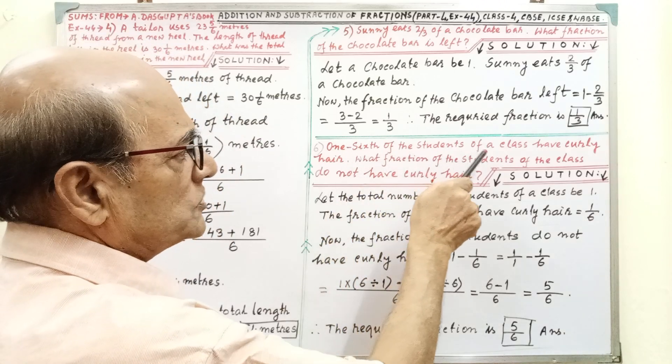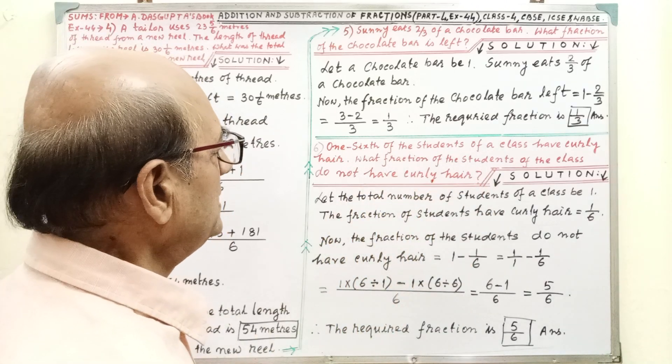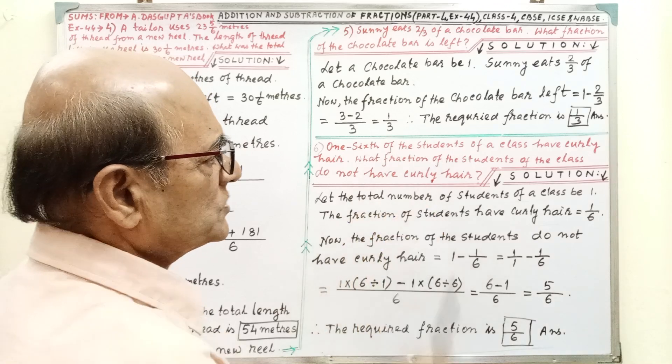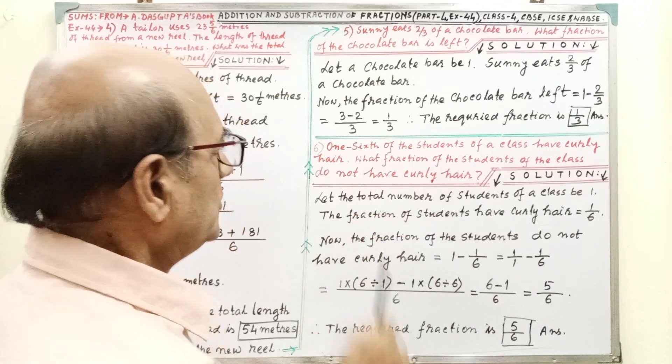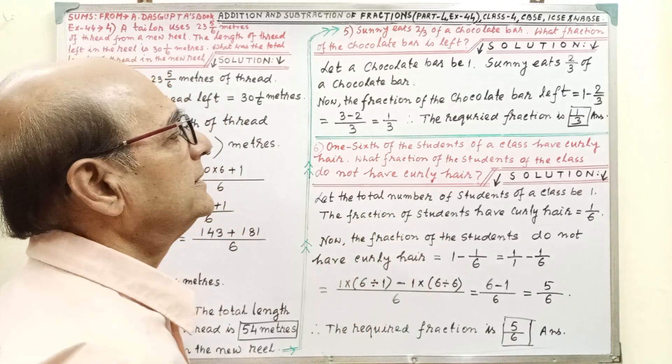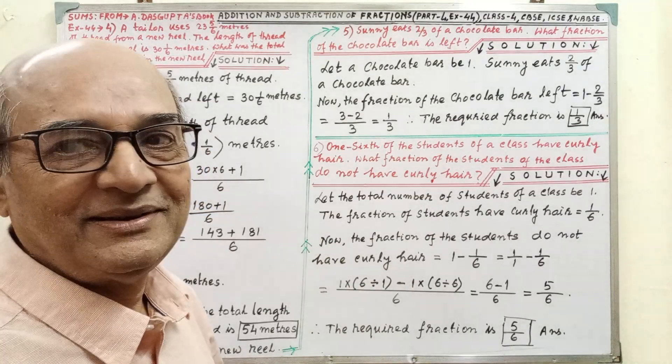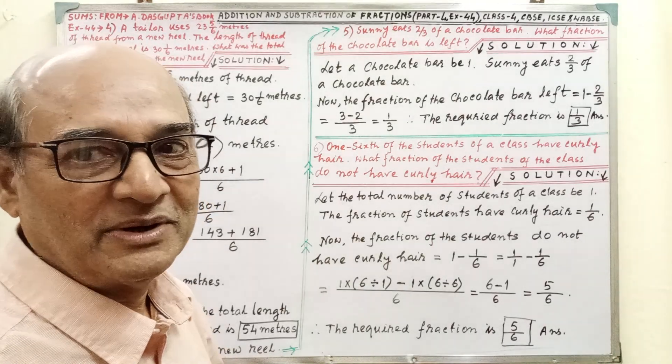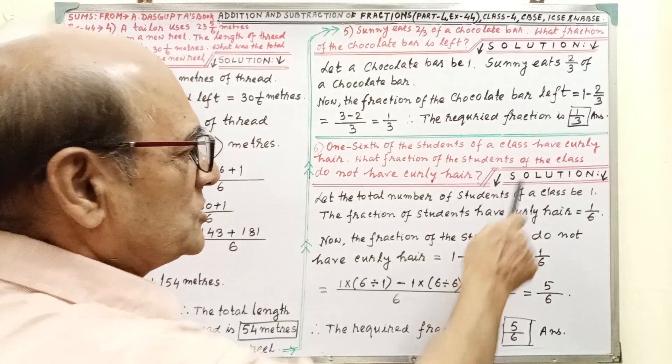Next sum. 1 sixth of the students of a class have curly hair. What fraction of the students of the class do not have curly hair? Here also, you have to go through the problem thoroughly.